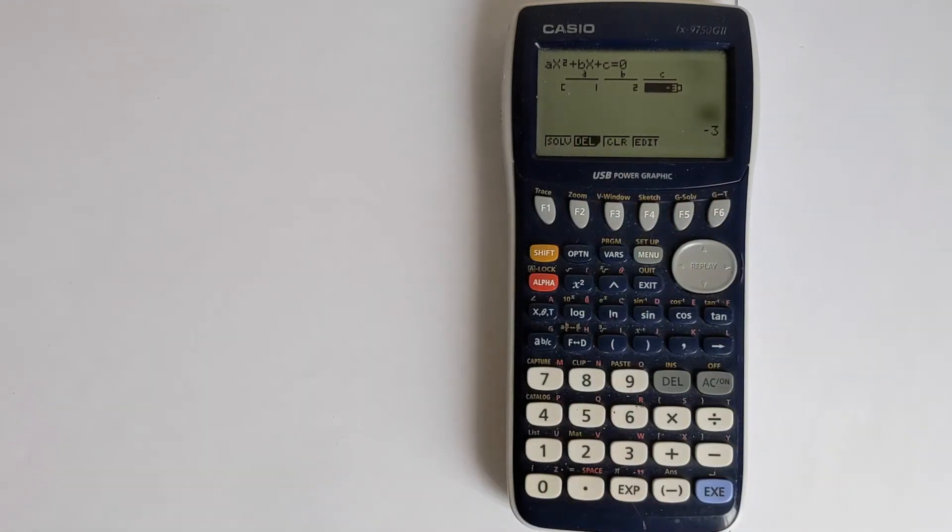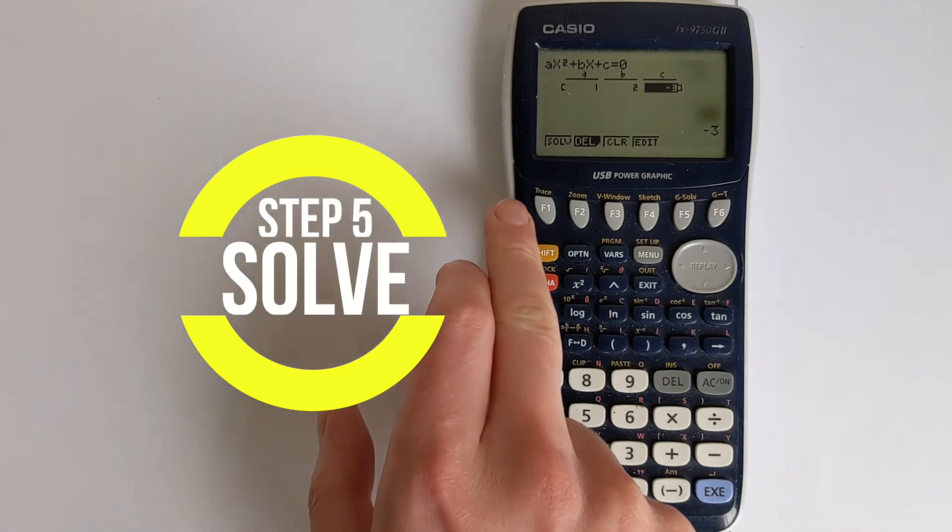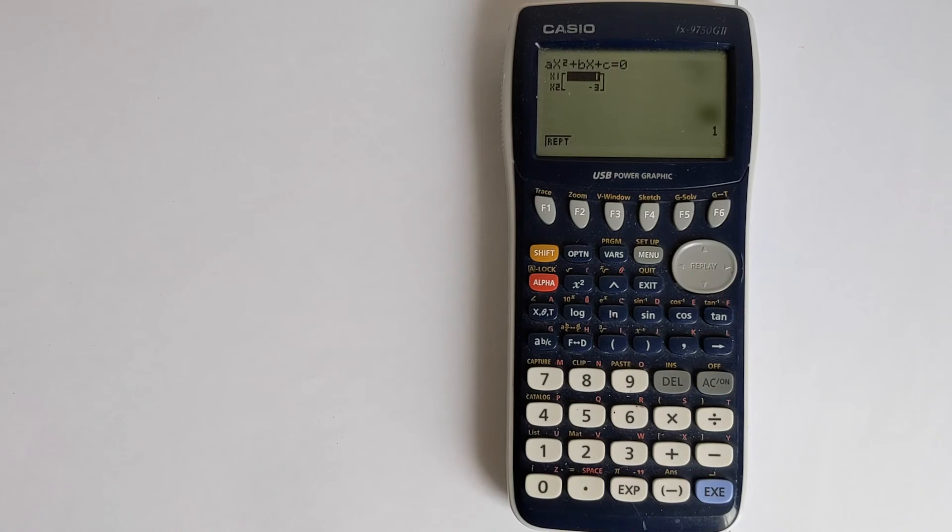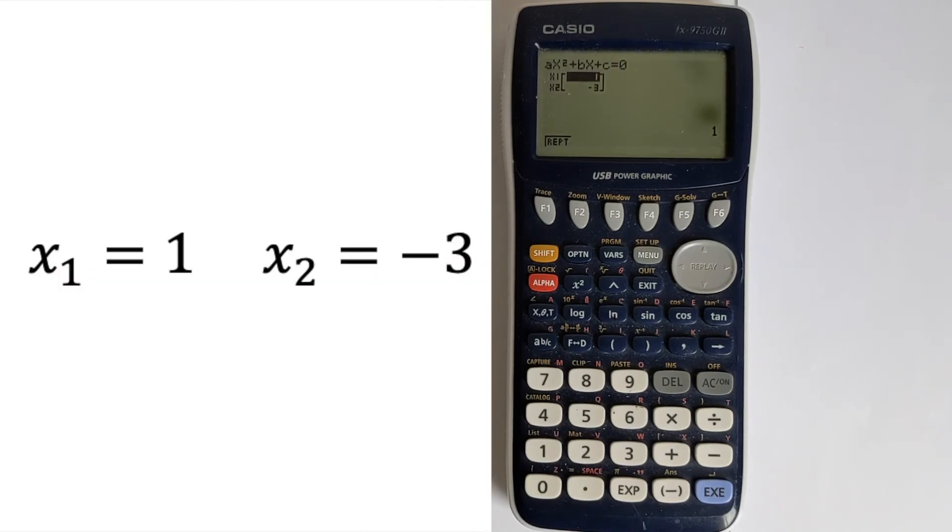That's it now entered. The next thing you do is solve it. You can either press F1 to solve, or you can press execute down here. That will give you a vector with the two answers. So x₁ is coming out as 1, and then x₂ is coming out as -3. And those are the correct answers.